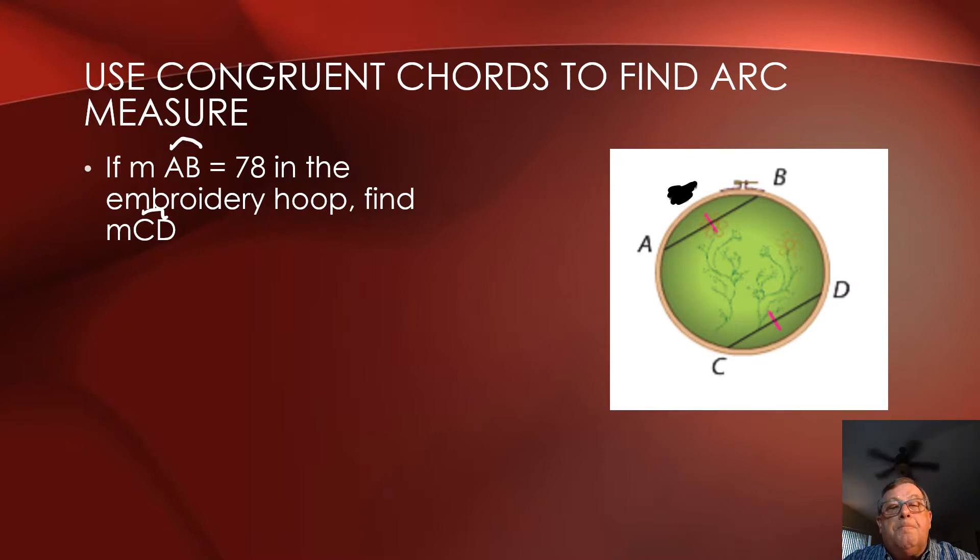We've got an example here, and we have a circle. In fact, we're told here in this problem that this is actually an embroidery hoop, and that the measure of chord AB is actually 78.